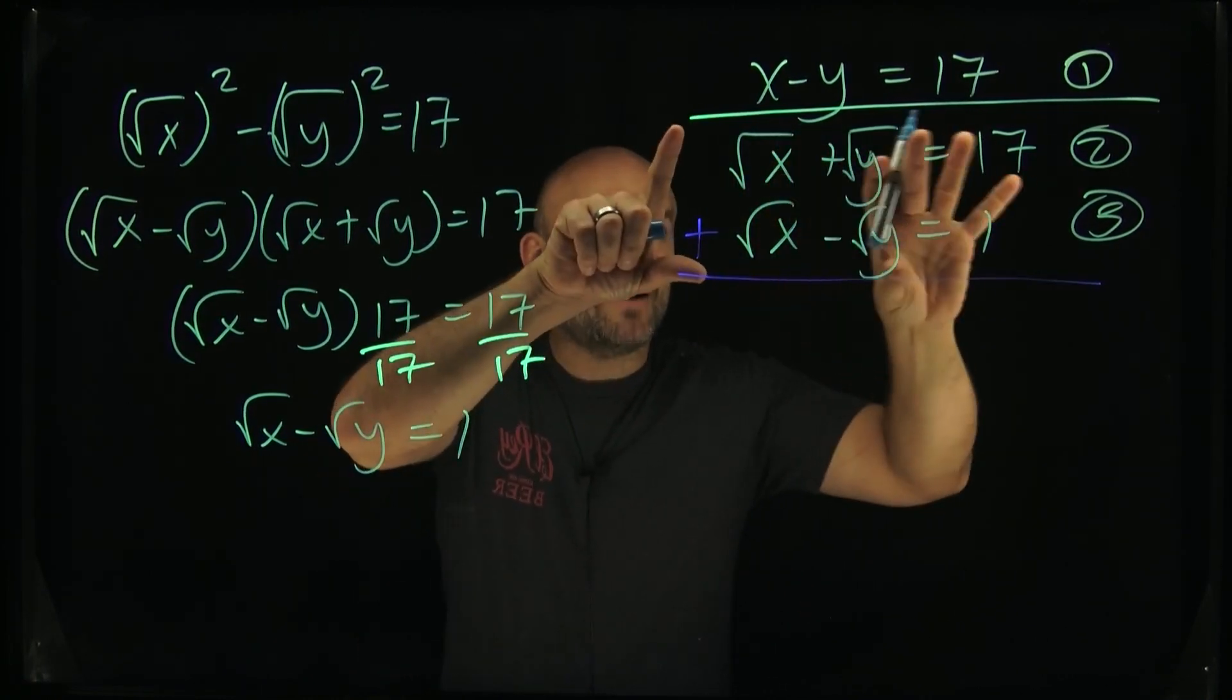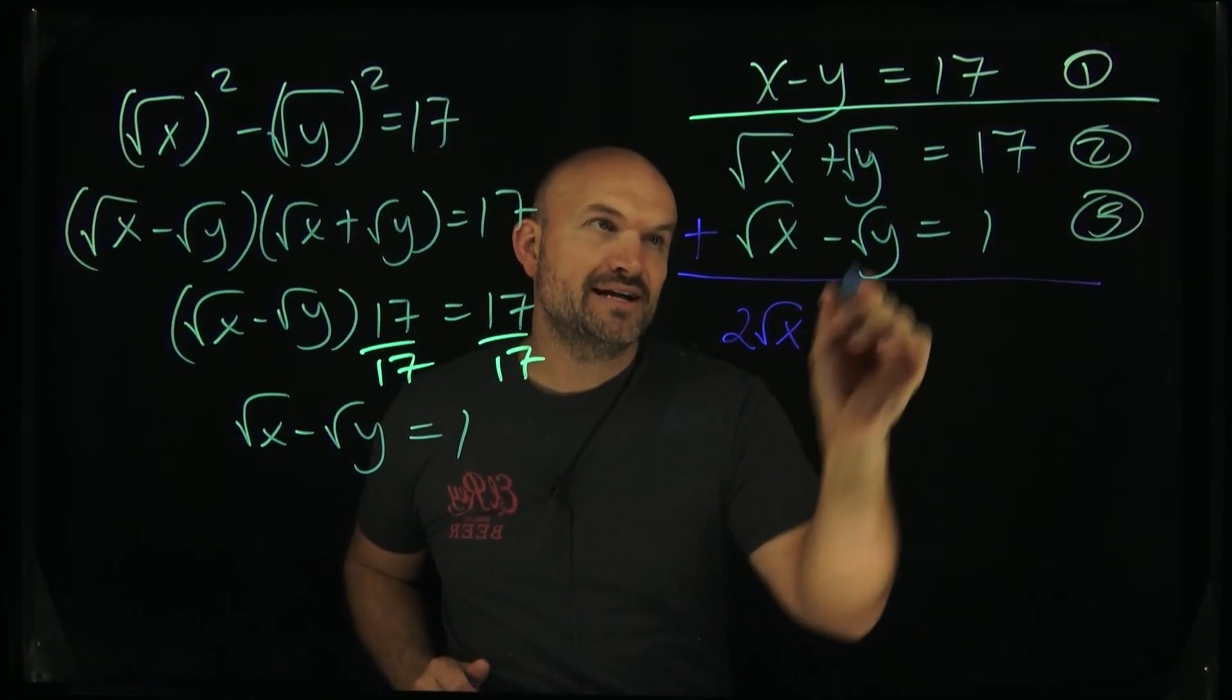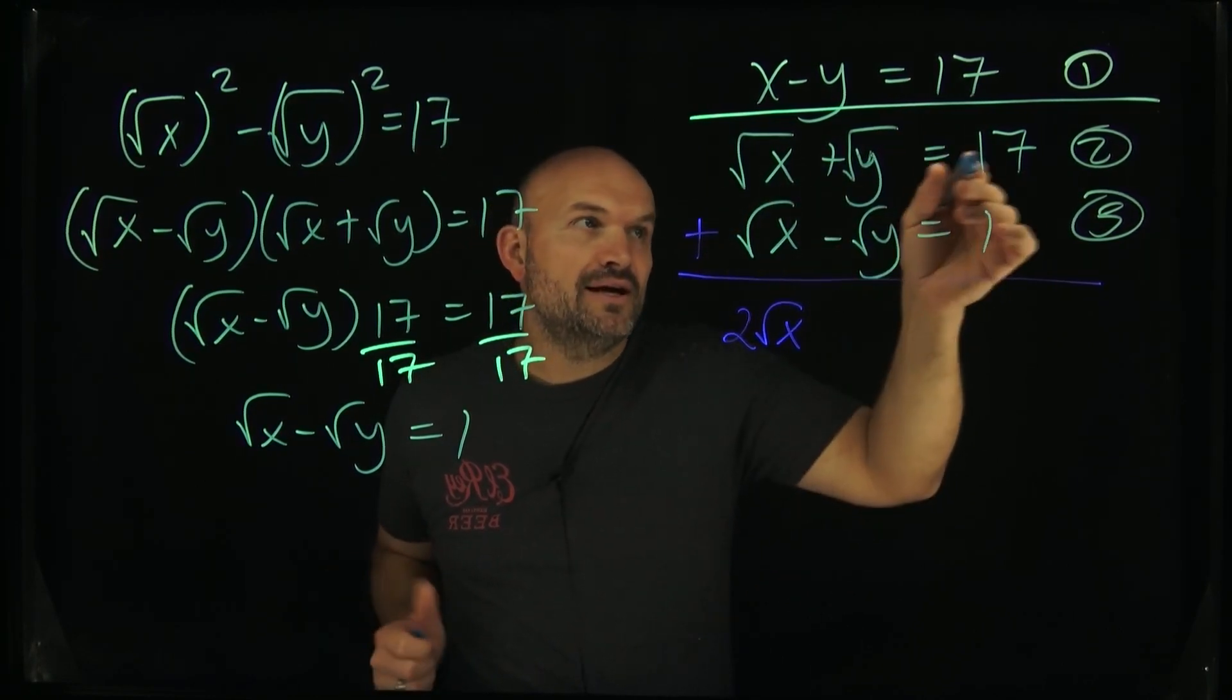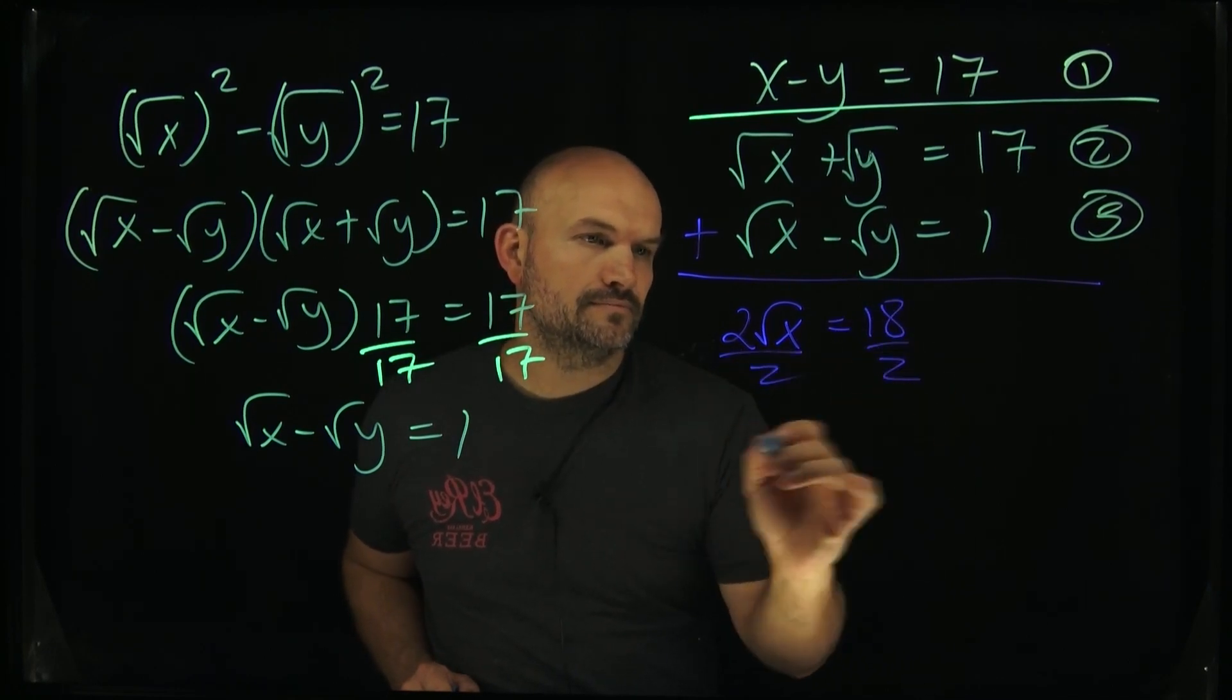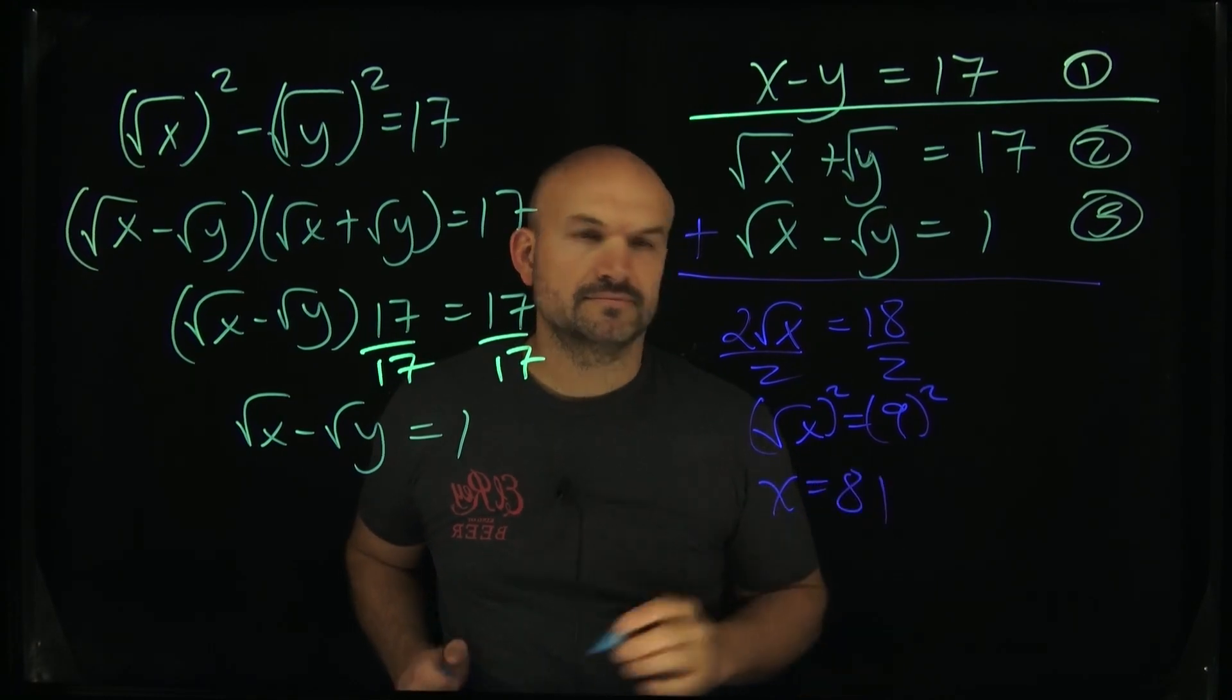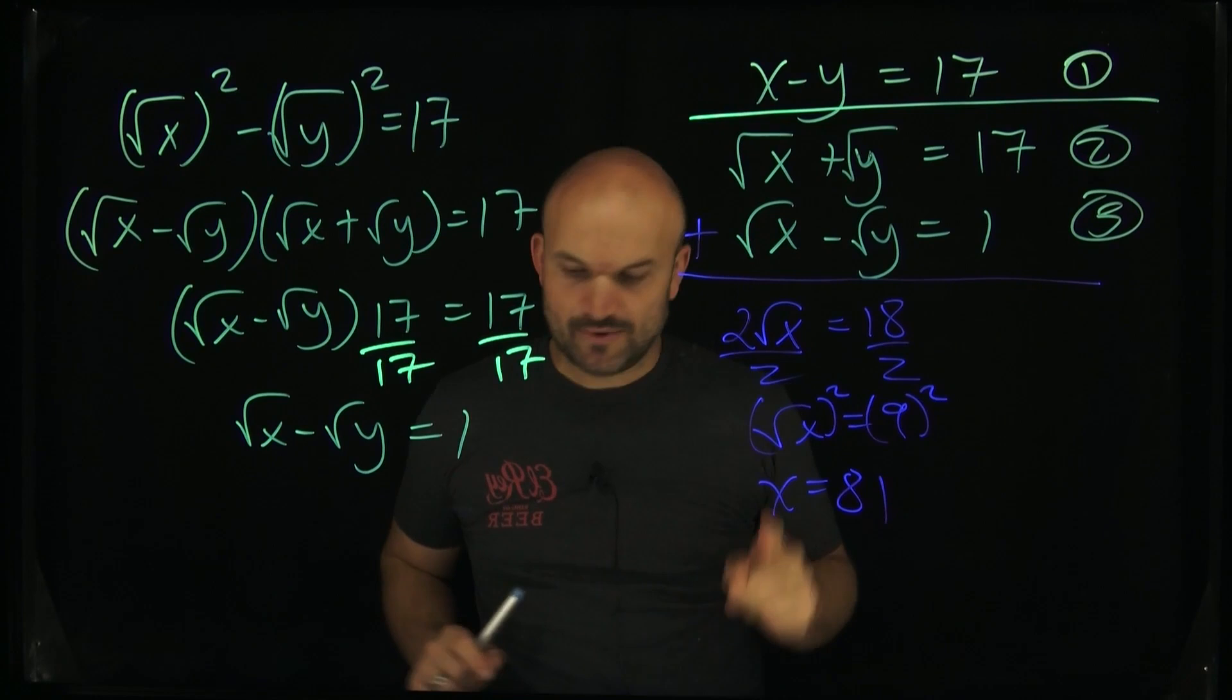So √x + √x is going to be 2√x. Positive √y plus negative √y is just going to be 0. 17 plus 1 is going to be 18. Following my inverse operations, I get x is going to equal 81.